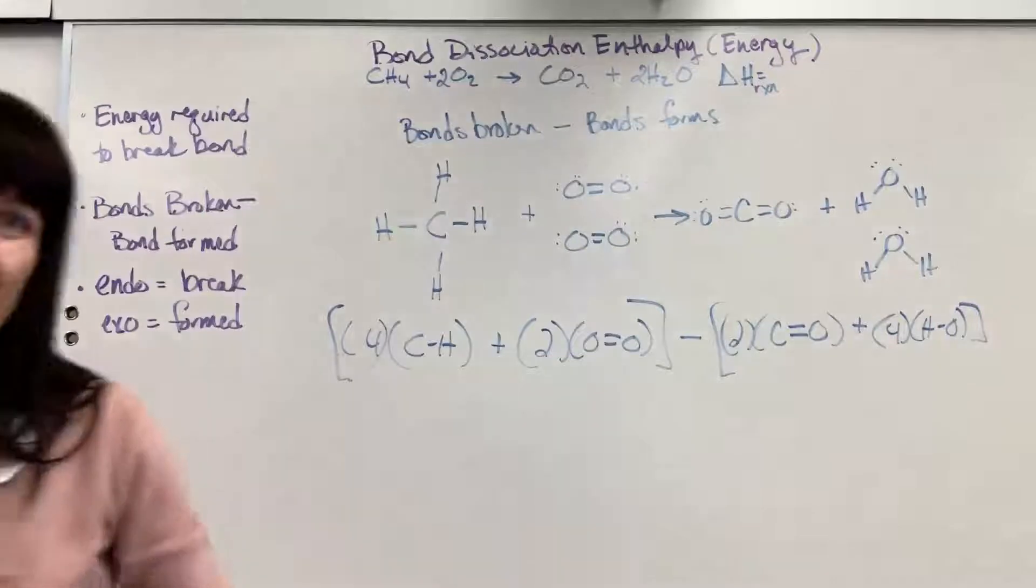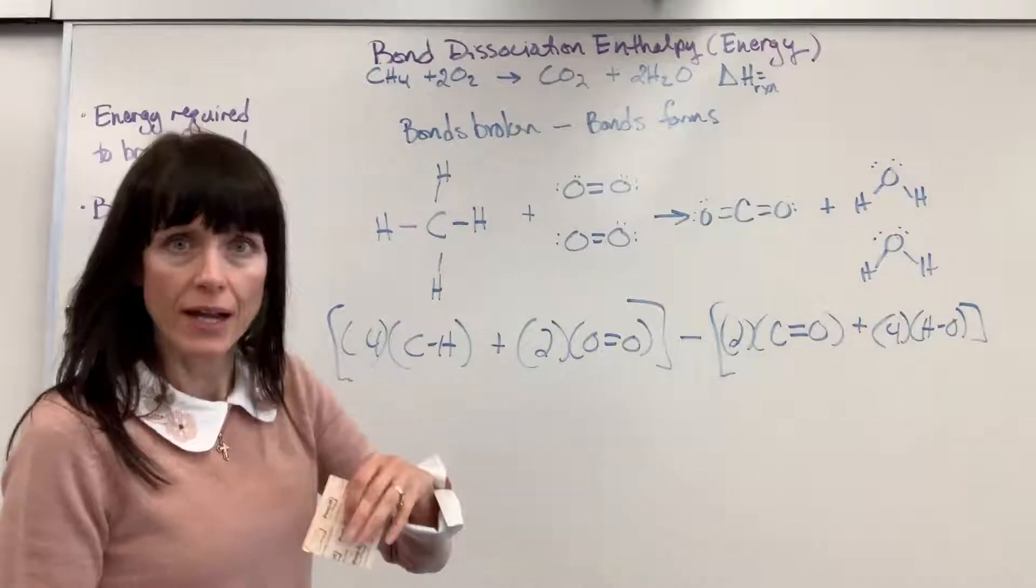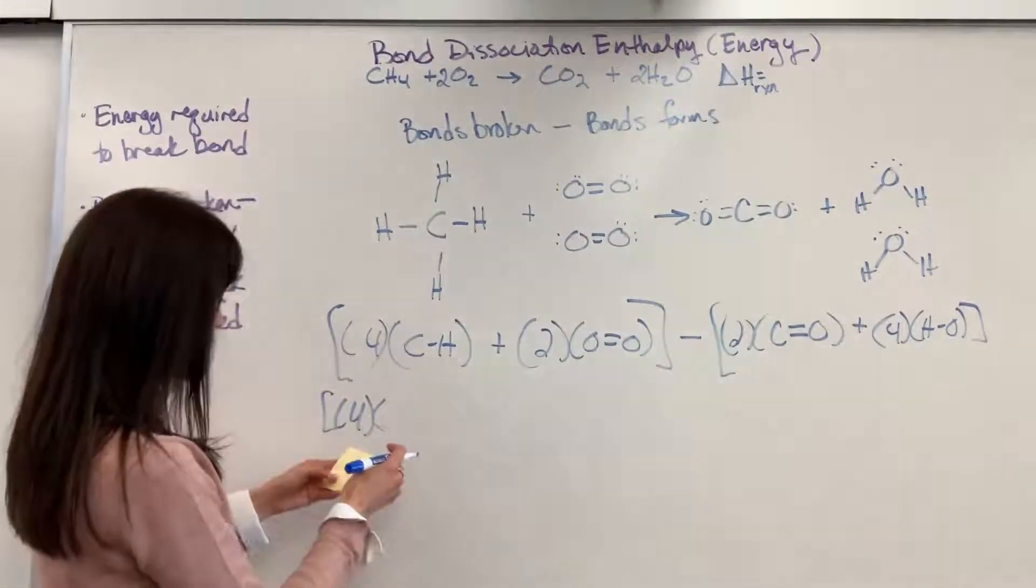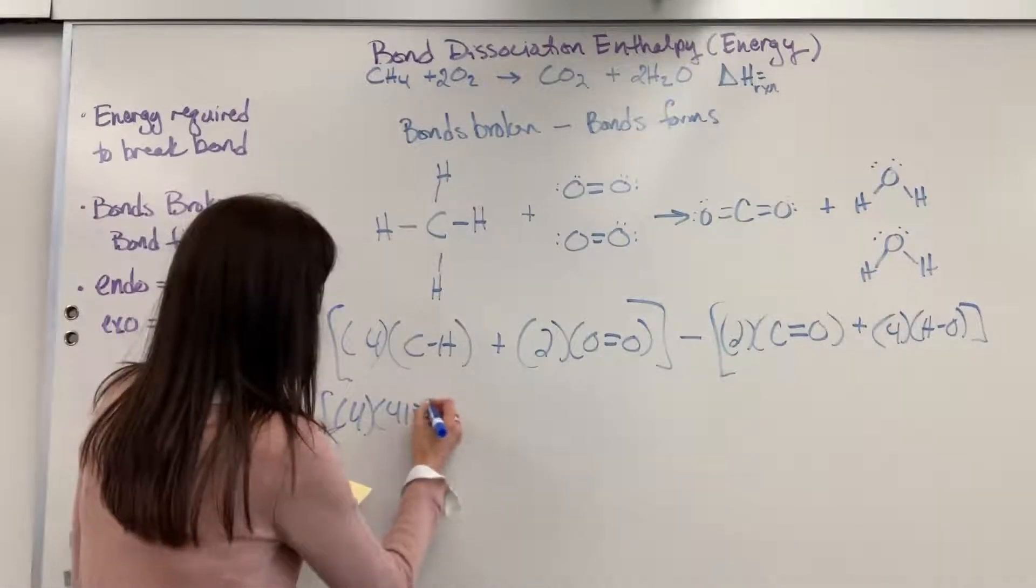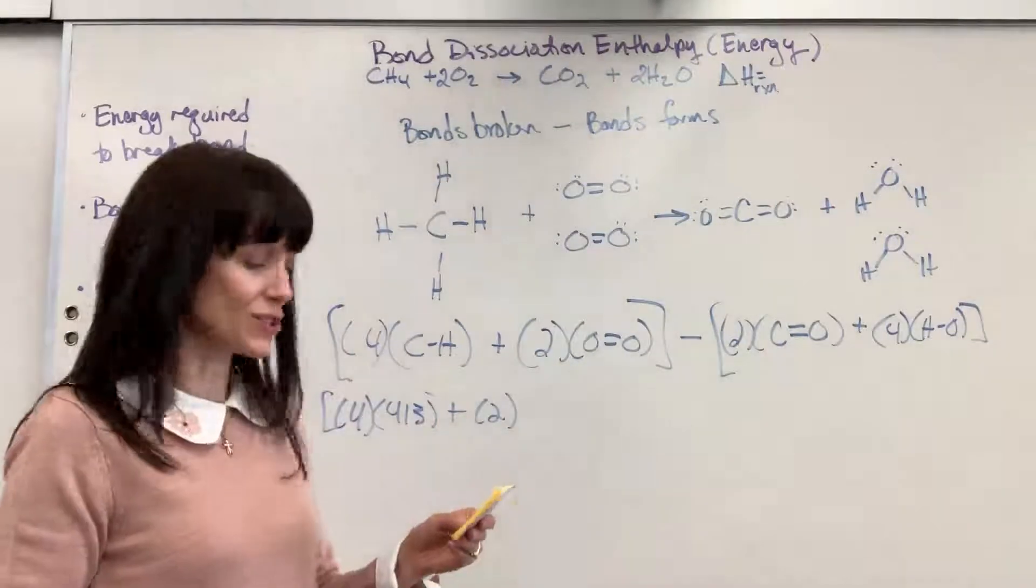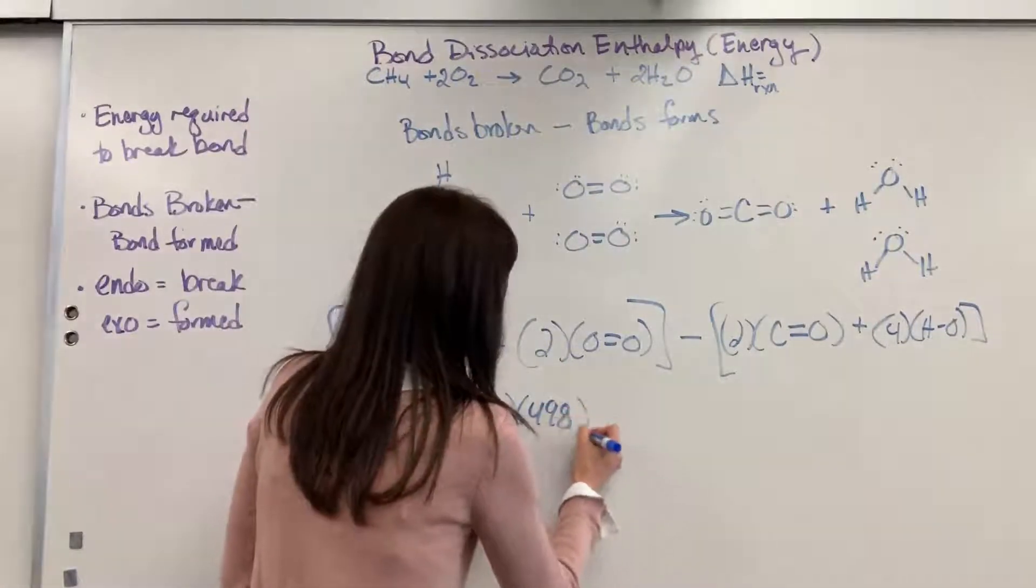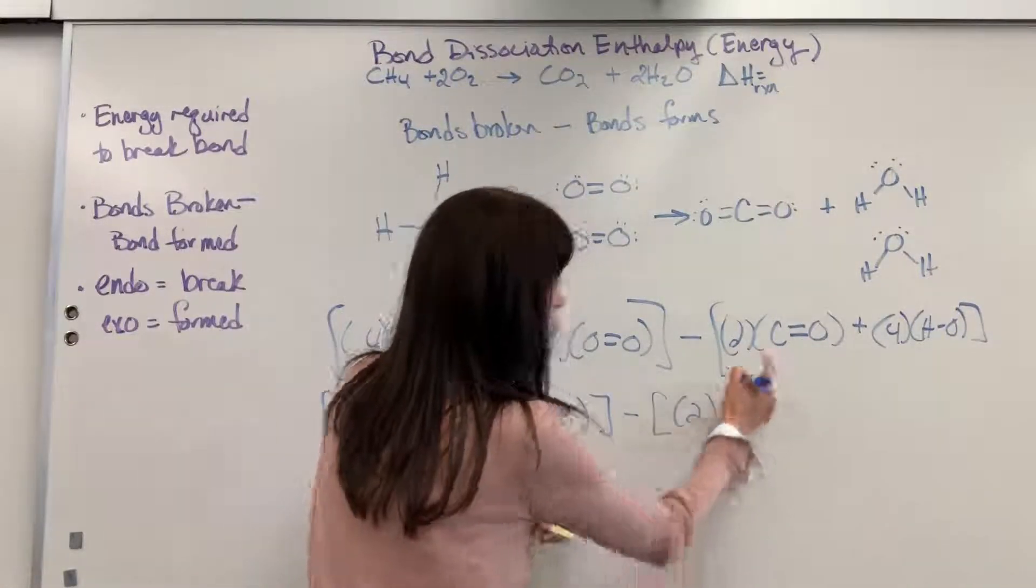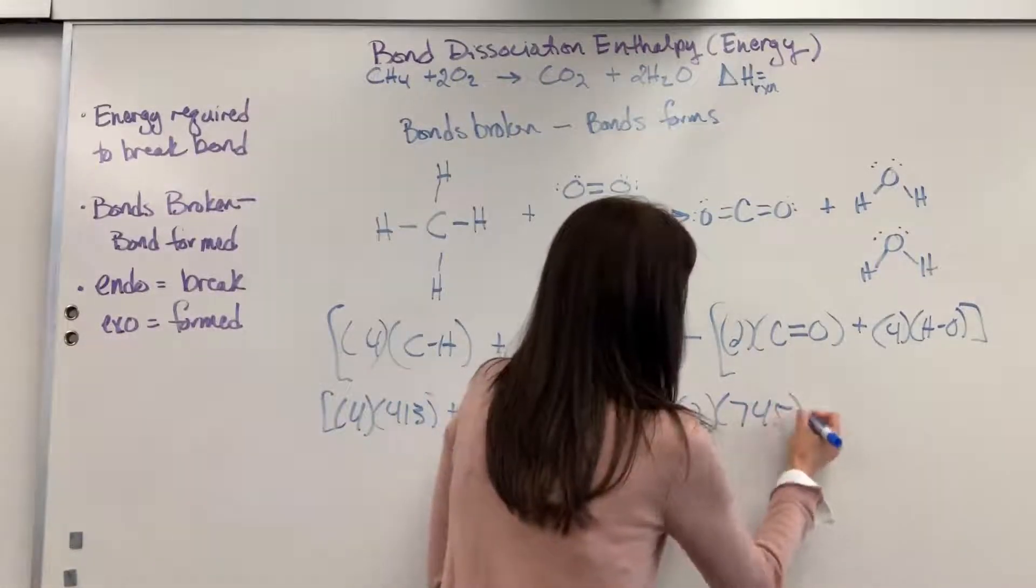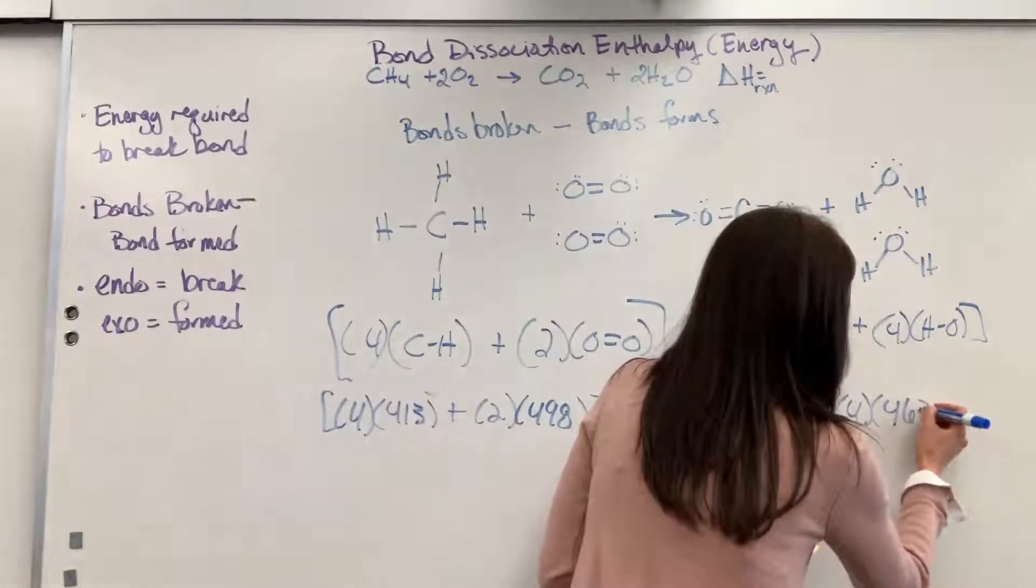Now, we look at the table. And I looked up these numbers for us. We look at the table and I found the carbon hydrogen. Here it is. Four, I've got four of those bonds times, looking that up, it is 413 kilojoules per mole. Plus, two, looked up the oxygen-oxygen double bond, and that is 498. Minus two times the carbon double bonded oxygen, that's 745. Plus four times the hydrogen oxygen, it's 463.